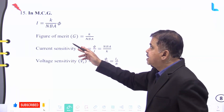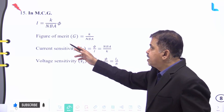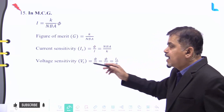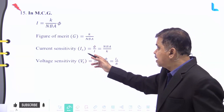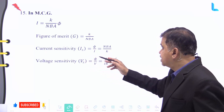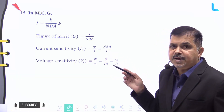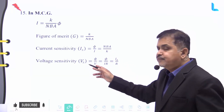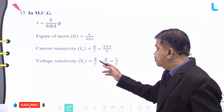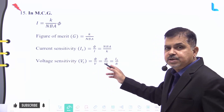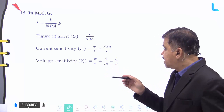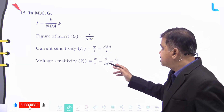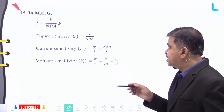For a moving coil galvanometer (MCG): the current I equals k divided by nBA times phi. The figure of merit G equals k divided by nBA. The current sensitivity is given by phi divided by I, which also equals nBA divided by k. The voltage sensitivity equals phi divided by V, which equals phi divided by (I times R), which equals current sensitivity divided by R.